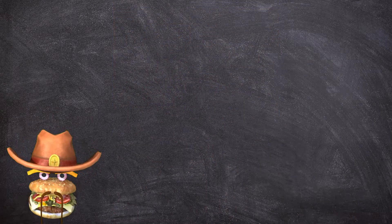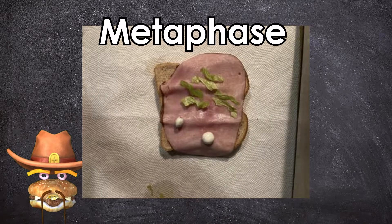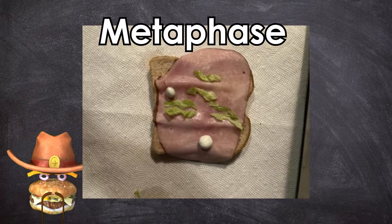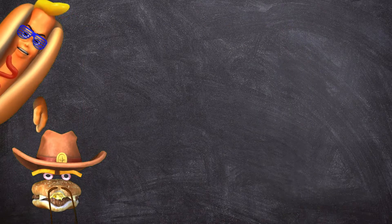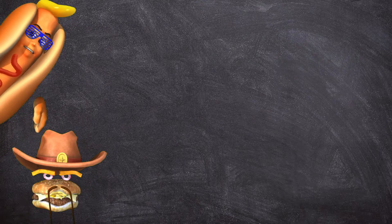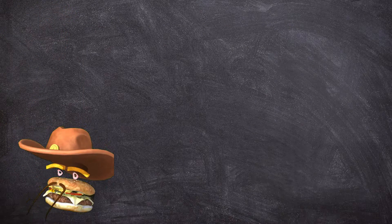After prophase is a step called metaphase. Here, the spindles line up the chromosomes at the equator of the cell, forming the metaphase plate. Now I'm hungry.